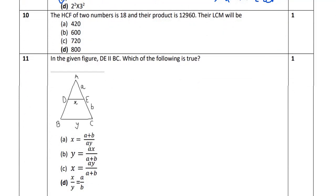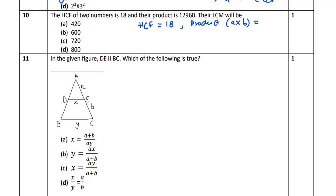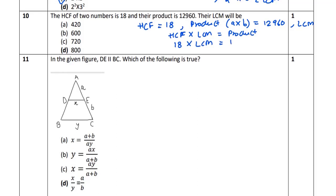Question 10: HCF of two numbers is 18, and their product is 12,960. Find LCM. Using the formula: HCF × LCM = Product of two numbers. So 18 × LCM = 12,960. Dividing: LCM = 12,960 ÷ 18 = 720. The answer is 720, which is option C.